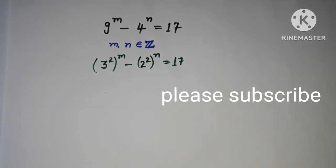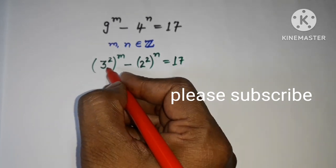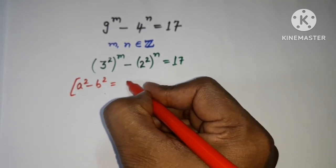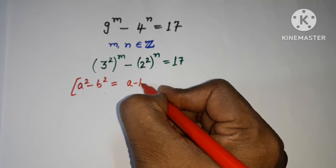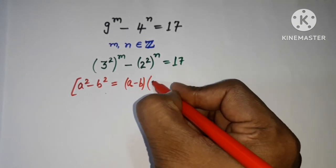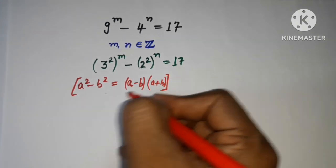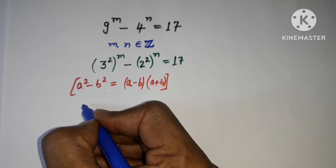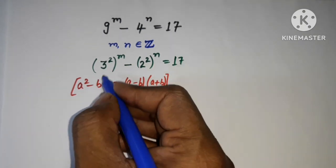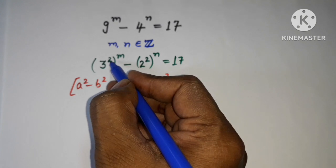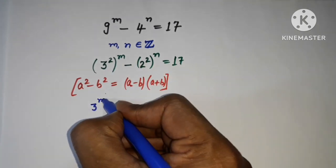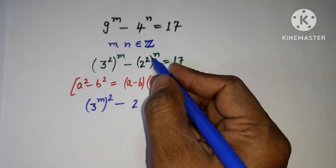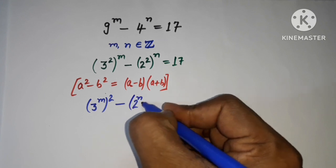The next step: we know this is of the form a squared minus b squared. There is a formula — a squared minus b squared can be written as (a minus b) times (a plus b). I can use this formula to solve this question. Before solving, this can be written with m and n as the powers and there is a square on each.